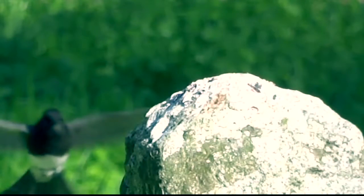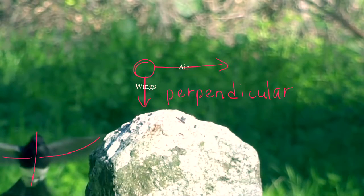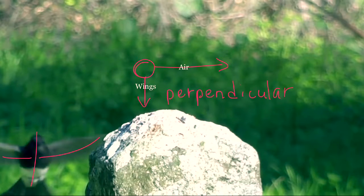Alright, so here's the first frame, and as we can see, the bird is in a vertical position with its wings flapping downwards so that the air is perpendicular to its body, and this creates the lift that it needs to get onto the rock.